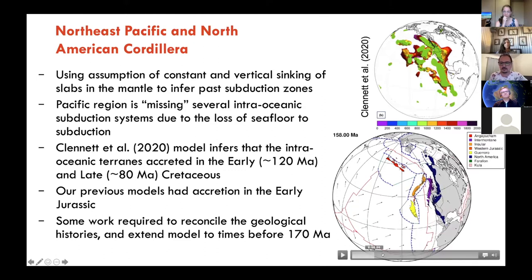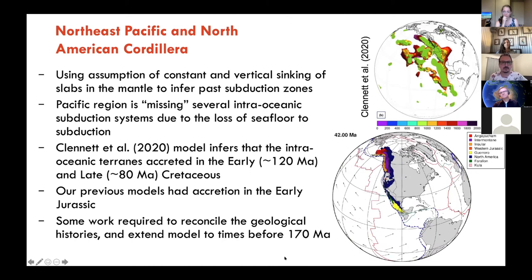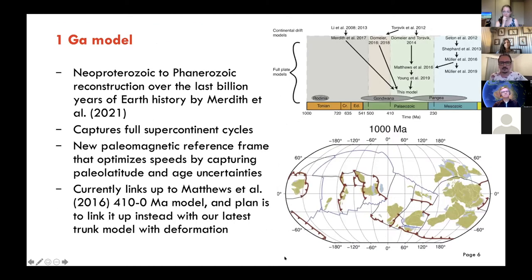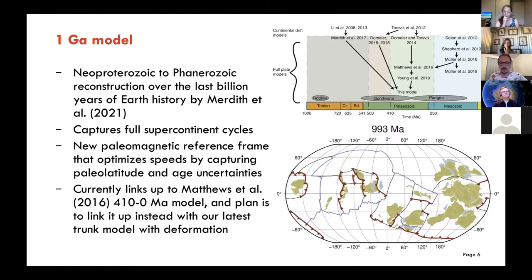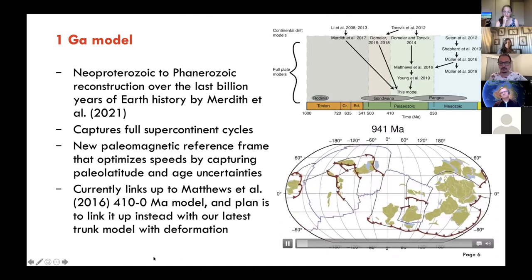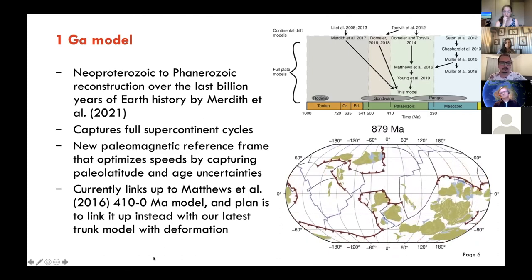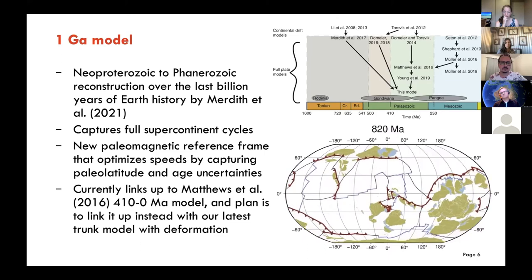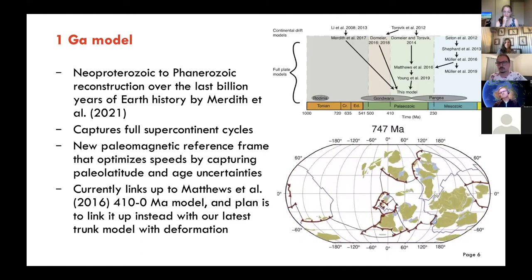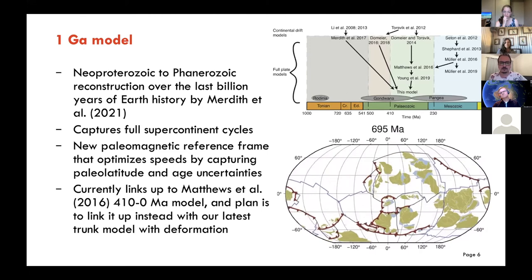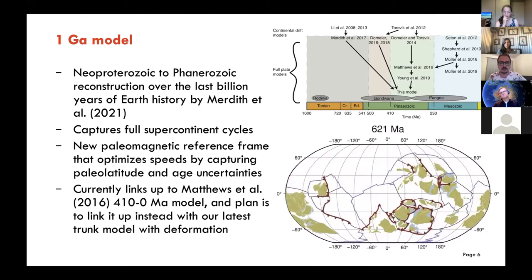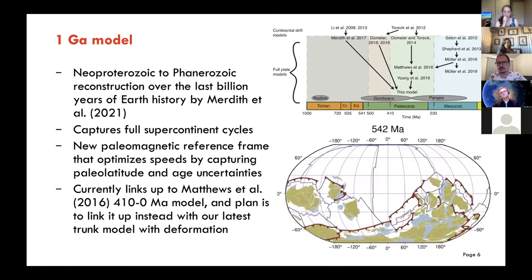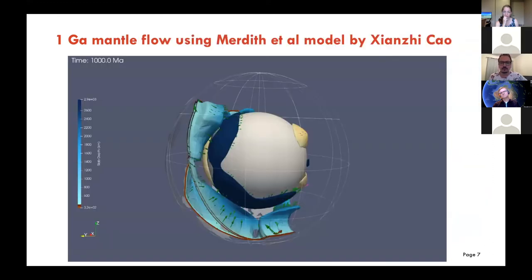This is essentially what that model looks like. Just the other day, the model for the last billion years was published — by Andrew Meredith and others in Earth Science Reviews. We now have a continuous plate reconstruction model for the last billion years that captures a full supercontinent cycle and uses a new paleomagnetic reference frame that optimizes continental speeds by capturing paleolatitude and age uncertainties.